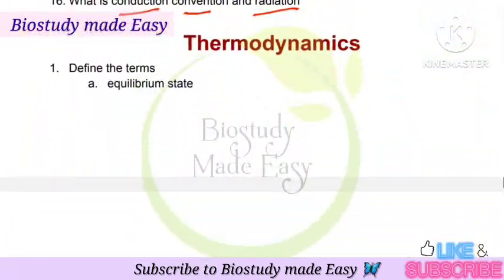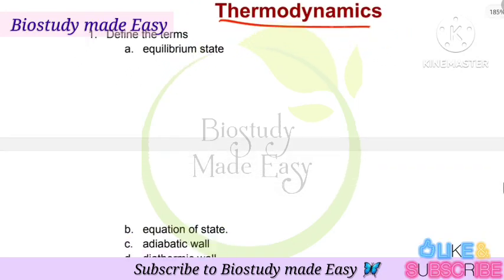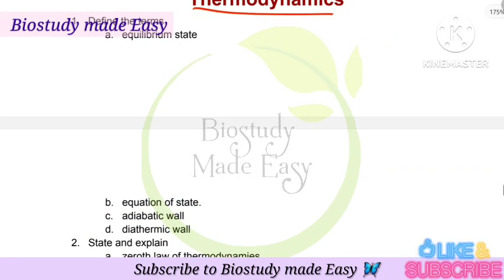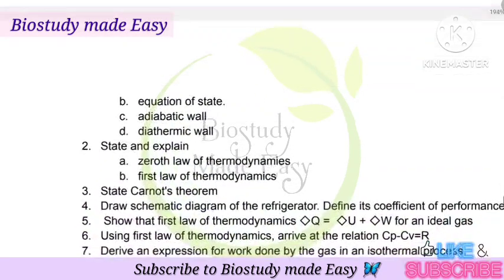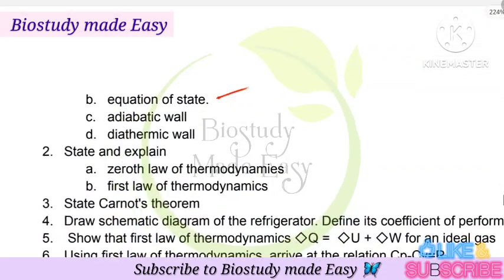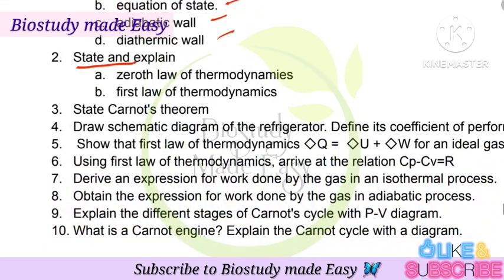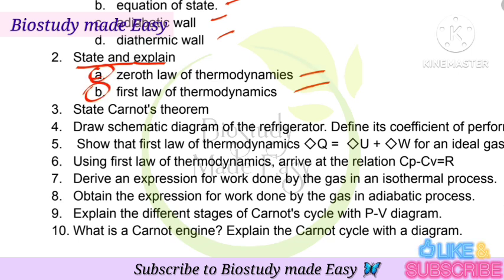Next, Thermodynamics chapter. Definitions to know: equilibrium state, equation of state, adiabatic wall, diathermic wall. State and explain the laws: zeroth law of thermodynamics — very, very important; first law of thermodynamics — very, very important.